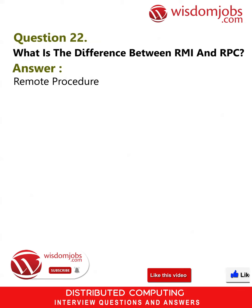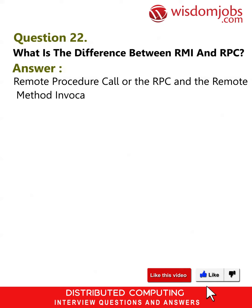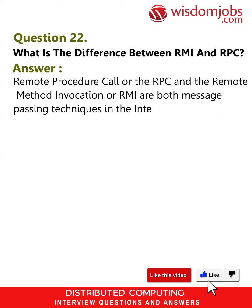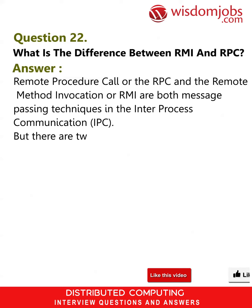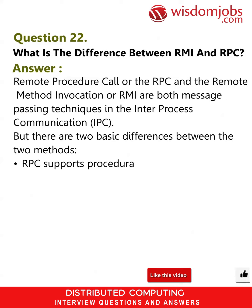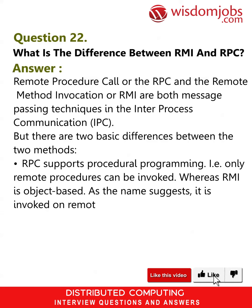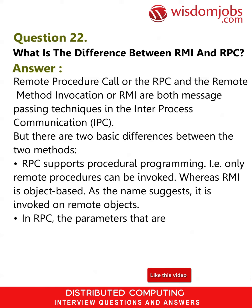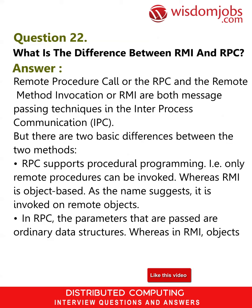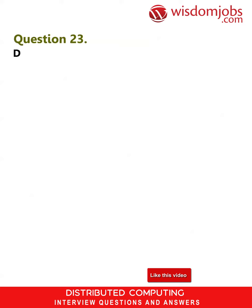Question 22: What is the difference between RMI and RPC? Answer: Remote Procedure Call (RPC) and Remote Method Invocation (RMI) are both message-passing techniques in inter-process communication (IPC), but there are two basic differences. RPC supports procedural programming — only remote procedures can be invoked — whereas RMI is object-based and is invoked on remote objects. In RPC, the parameters passed are ordinary data structures, whereas in RMI, objects can be passed as parameters.